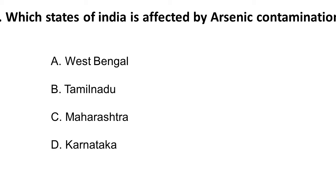West Bengal has a lot of fertile agricultural land due to the Ganga and Brahmaputra region, with extensive farming activity. Arsenic contamination affects seven states in the flood plains of the Ganga and Brahmaputra rivers — including Uttar Pradesh, Bihar, northeastern Assam, and West Bengal. The correct answer is A) West Bengal. A helpful tip: eliminate southern states; if a northern state is listed, prefer that option.